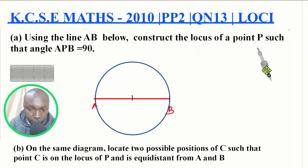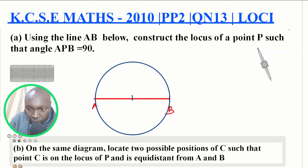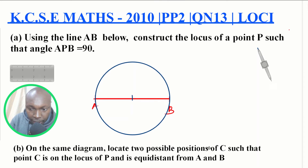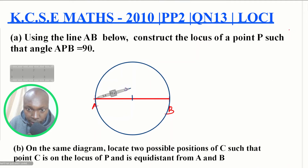For the second part: on the same diagram, locate two possible positions of C such that point C is on the locus of P and is equidistant from A and B. The part that guides us here is the condition that C should be equidistant from A and B. The locus of a point equidistant from two fixed points — in this case A and B — is the perpendicular bisector of the line connecting those two points.